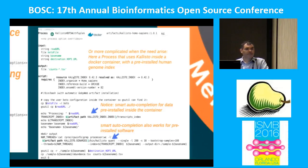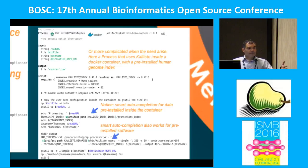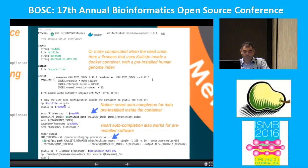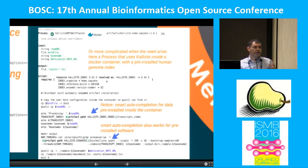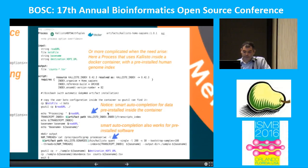In this declarative way, we specify that we need the Kallisto index corresponding to a given organism, version, build, and version of Ensembl. When you generate this to Nextflow, we generate all the code needed to download the Ensembl transcripts, download Kallisto, compile it, build the transcript index, and run. When the script starts, it's ready to get data from Google Cloud, stage it on the machine. We can also pre-package things in the Docker image for clinical applications where you want to freeze the workflow completely.